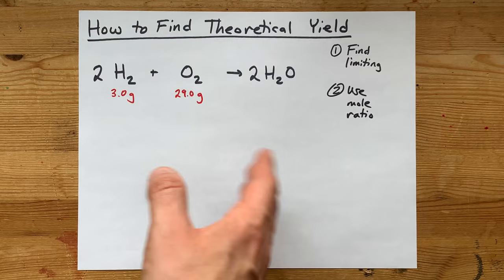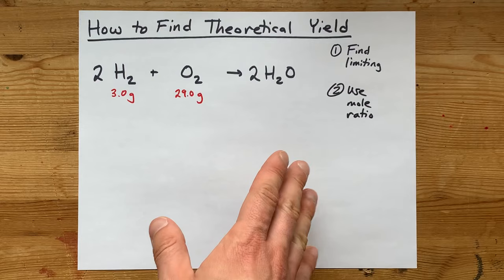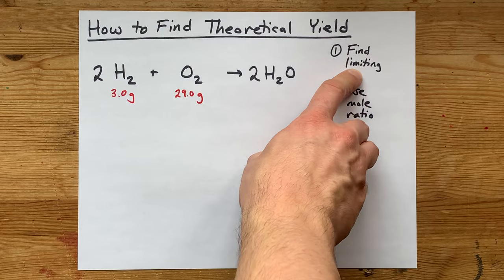How do you find the theoretical yield of a product? That is, how much of the product can be made if the reaction goes completely to completion, like 100% forward?